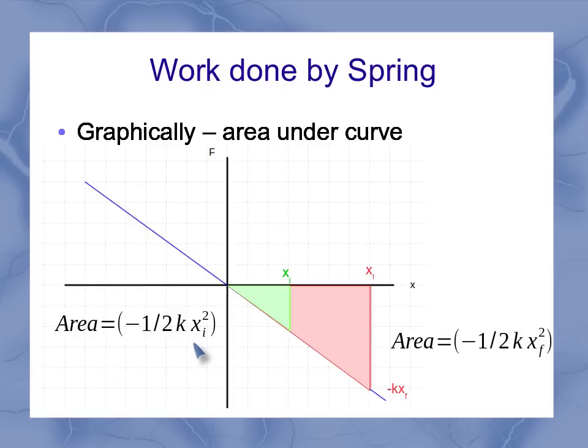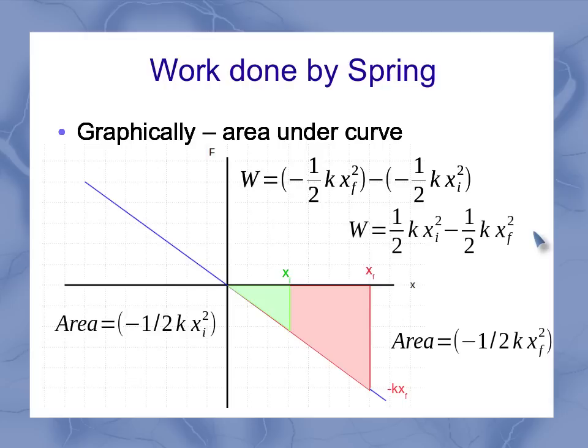And the area I really care about for the work is this little trapezoid that's left over in here, which is the large red triangle minus the small green triangle. And rearranging with our minus signs and putting my positive term first, I've got 1 half kx initial squared minus 1 half kx final squared, as my area of the work done by the spring.